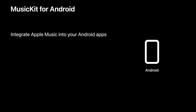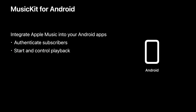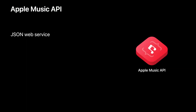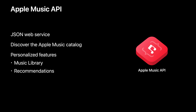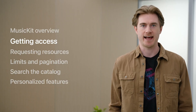MusicKit for Android lets you integrate Apple Music into your Android applications. Support for authenticating Apple Music subscribers, controlling content playback, and full access to the Apple Music API allows you to build a rich music experience. Apple Music API is the common JSON web service that provides access to discovery features and Apple Music catalog content. Authenticated subscribers can access personalized features, including their music library, recommendations, and recently played history. Next, I'll explain how to get access.